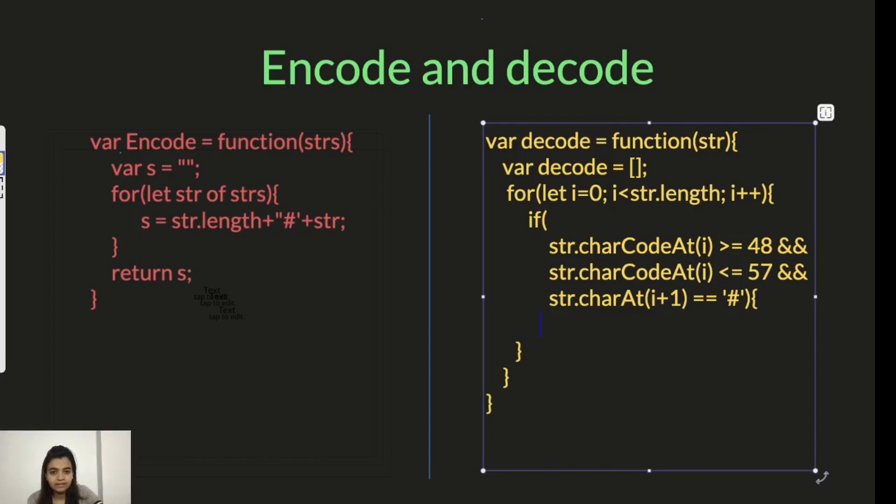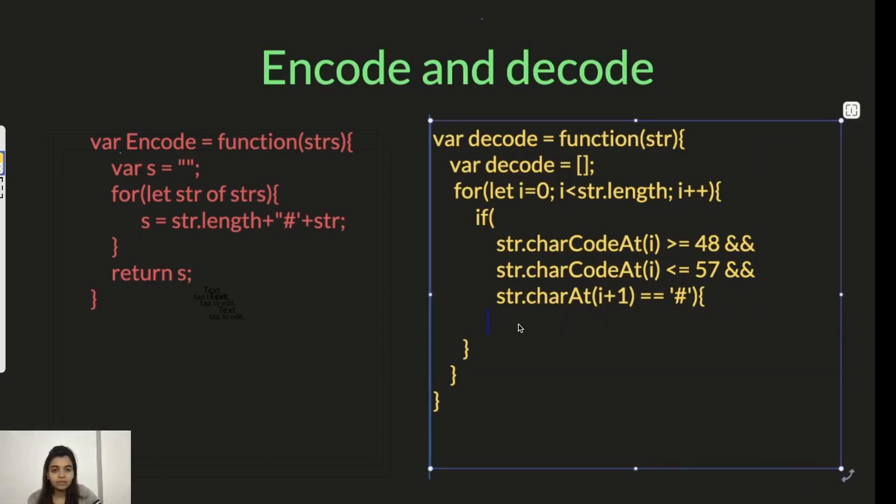Now we have to convert that character into a number value because we need to know how many letters we need to pick after the hash. So for that we have word size equals string.charCodeAt i minus 48. If we do this it will just convert the character into a number.